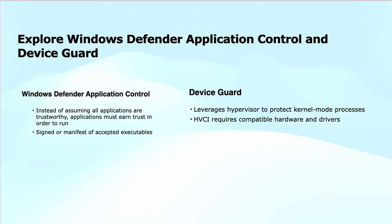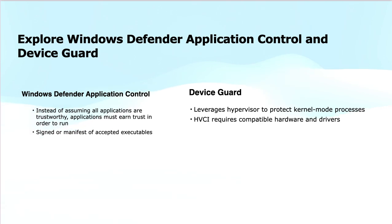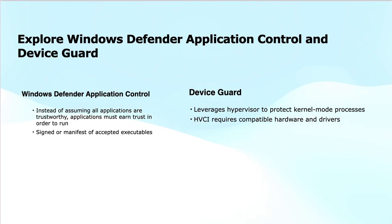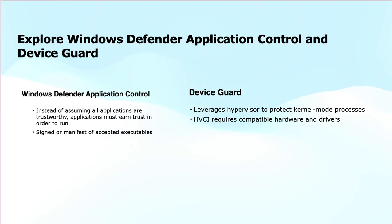Next is Device Guard, which is a security feature in Windows that leverages the hypervisor — the virtual machine layer used to create virtual machines on top of hardware — to protect kernel mode processes from being tampered with by malicious software. It ensures that only trusted code can run in the most sensitive areas of the operating system, helping prevent advanced attacks that target the kernel. Hypervisor-enforced code integrity (HVCI) is the key component of Device Guard. It checks and enforces code integrity for kernel mode processes and requires compatible hardware like TPM and virtualization support, as well as signed drivers to function properly. In short, Device Guard strengthens system security by ensuring only trusted software runs at the most privileged levels of the OS, making it much harder for attackers to exploit vulnerabilities.